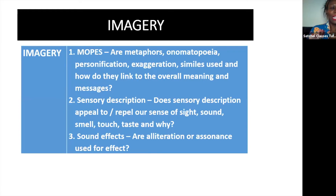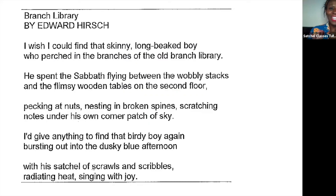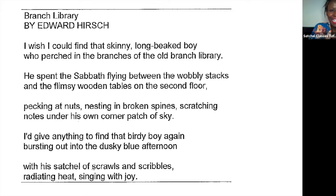The I in SMILE is about imagery — the deliberate techniques a writer uses: metaphors, onomatopoeia, personification, exaggeration, similes, sensory description, and sound effects. In this poem, the whole thing seems to be an extended metaphor. The boy is 'long beaked' and perching in the branches of the library — 'branch library' is a play on words. He's flying, nesting, scratching, scrawling. We get the idea of a boy collecting scraps of information as if he were a bird, gathering sticks to build a beautiful nest.